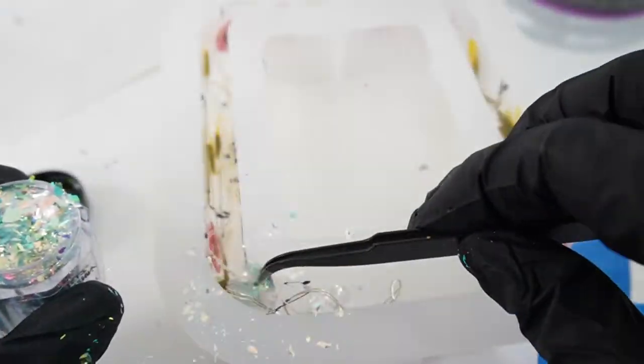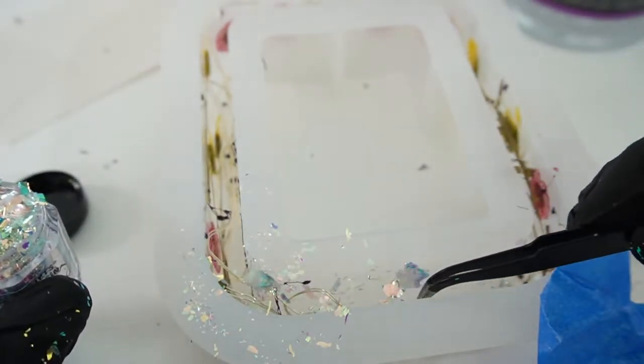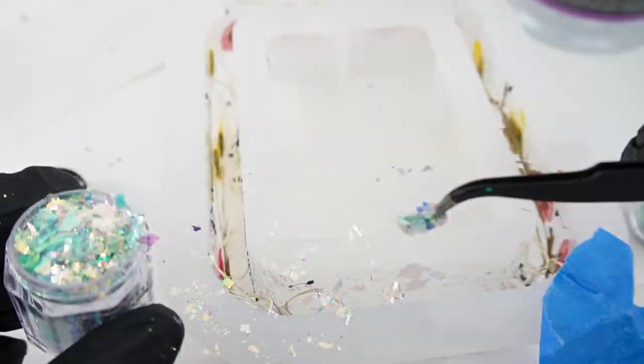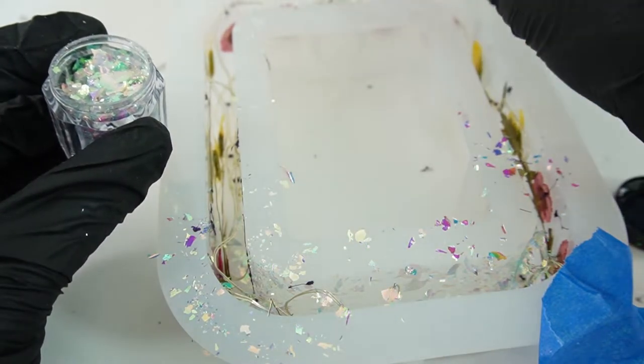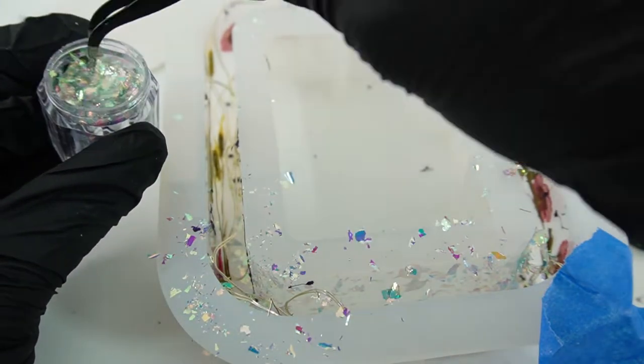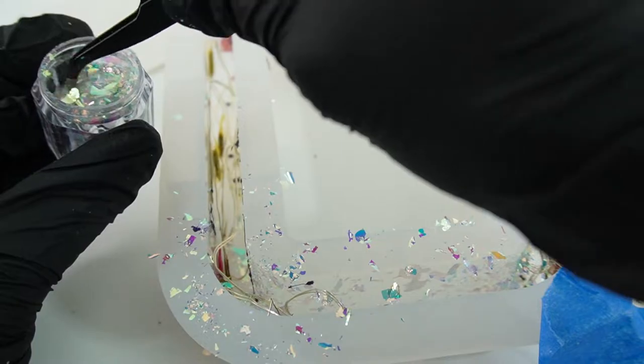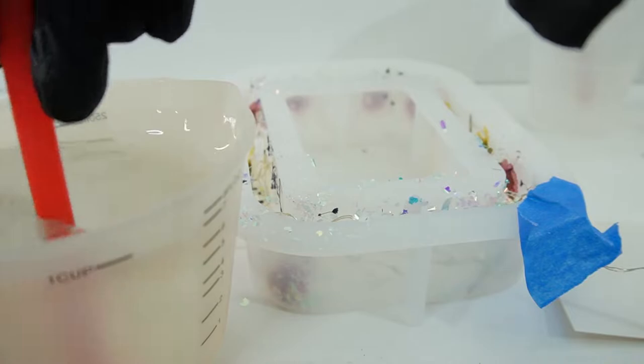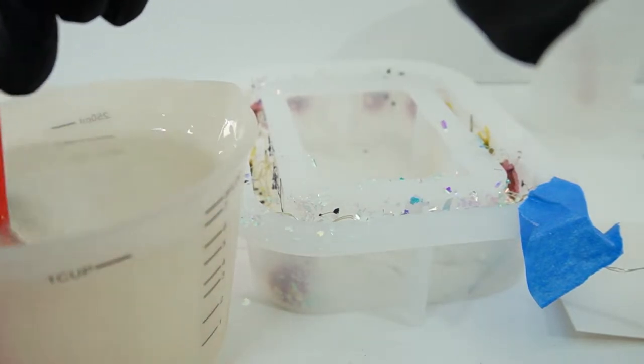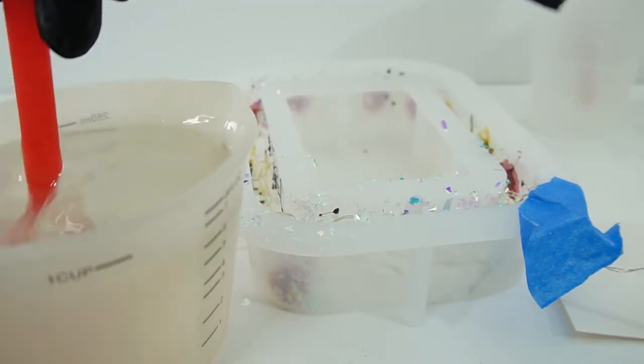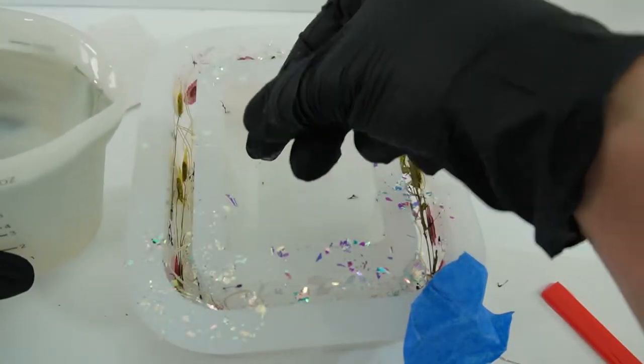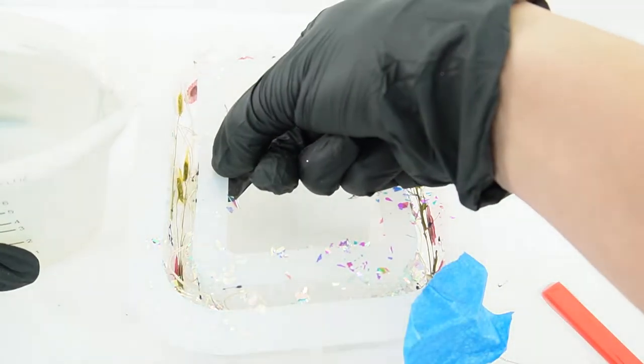Next, let's mix the resin. I'm going to make about eight ounces of resin, which is about one cup. I'm not sure how much resin the mold needs, but I think it's better to have extra than to not have enough. Now let's go ahead and pour the resin in. It's going to be a little bit tricky because it's kind of narrow.